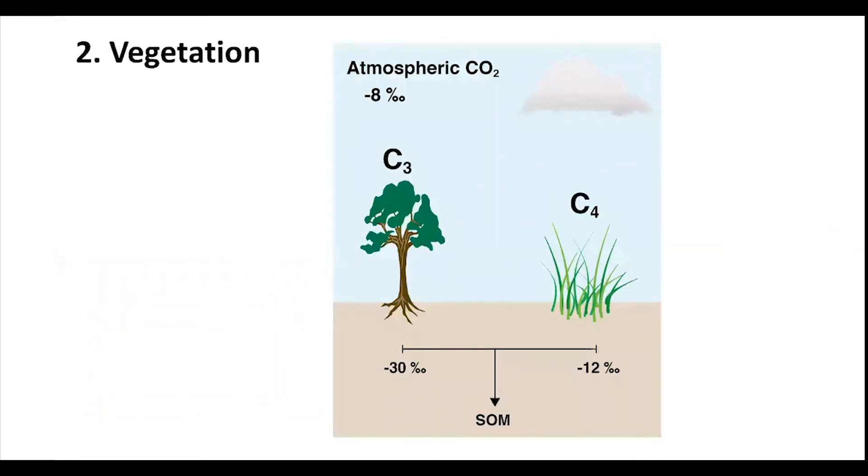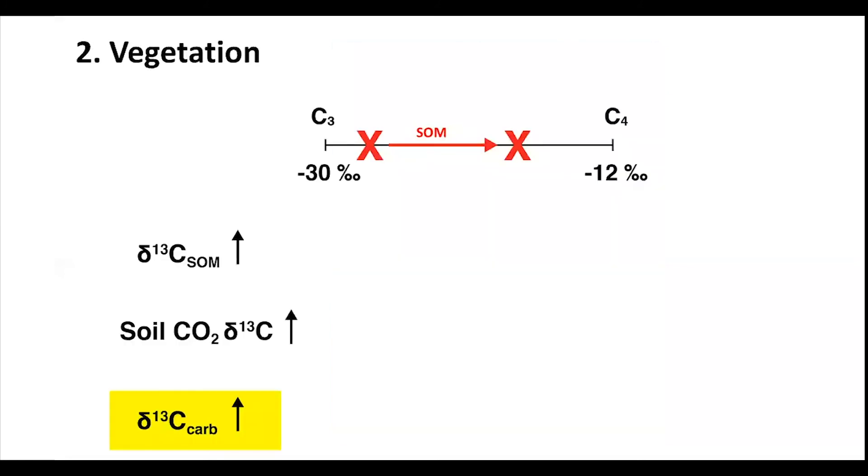Because C3 and C4 plants have very different delta C13 values due to their differing photosynthetic pathways, soil carbonates would have delta C13 values representative of the dominant vegetation. Similarly, we could also potentially identify a shift from one vegetation type to the other by a shift in soil carbonate delta C13 values. C4 vegetation tends to dominate in more arid ecosystems due to their more advanced pathway.